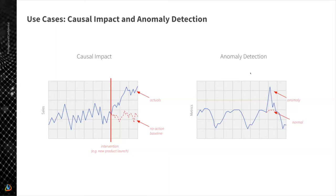Another example is anomaly detection. Imagine collecting multiple metrics from your application or infrastructure and sending alerts to the operations team when abnormal behavior is detected. This is often solved through forecasting models — we forecast how a metric should normally evolve, and if there's a significant difference between expected and observed behavior, we raise an alert. Again, this requires understanding normal behavior and separating regular patterns from anomalies — a problem of decomposition and forecast interpretation.